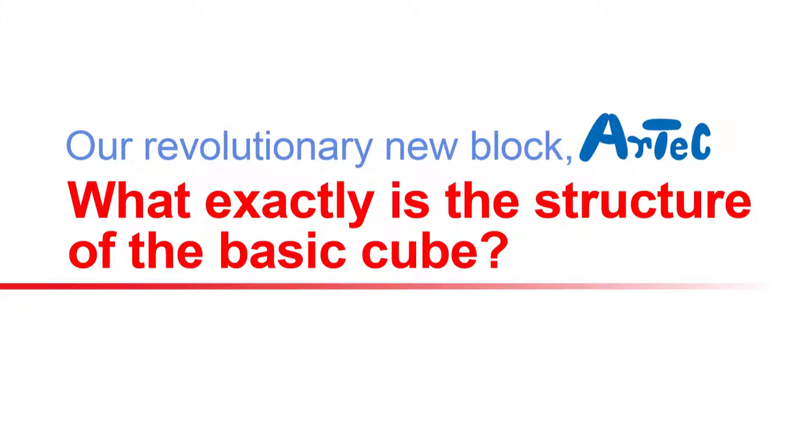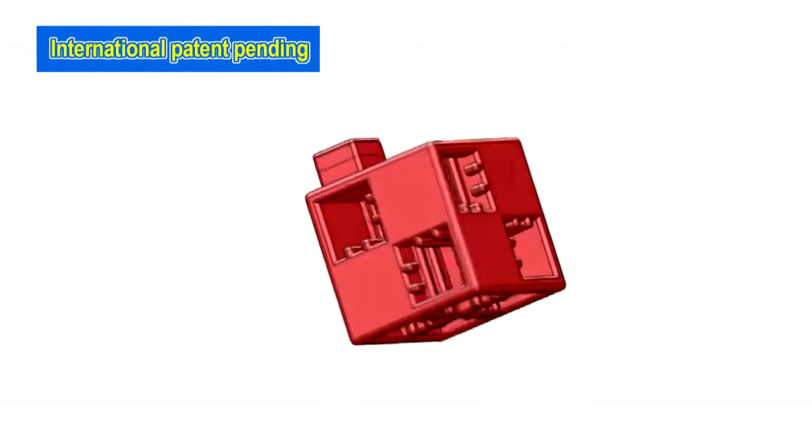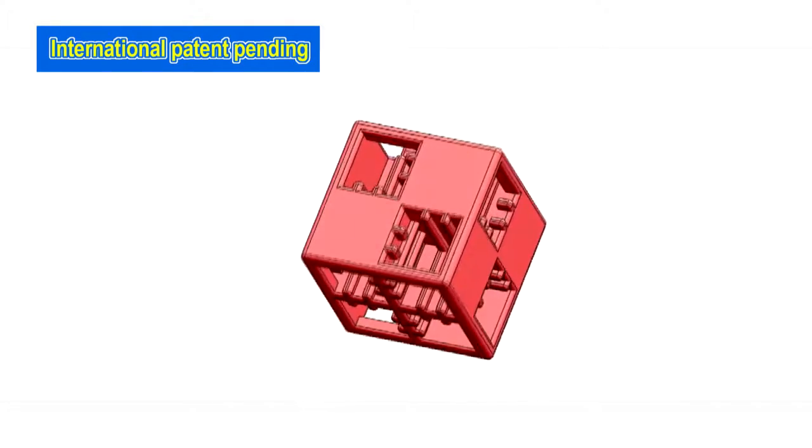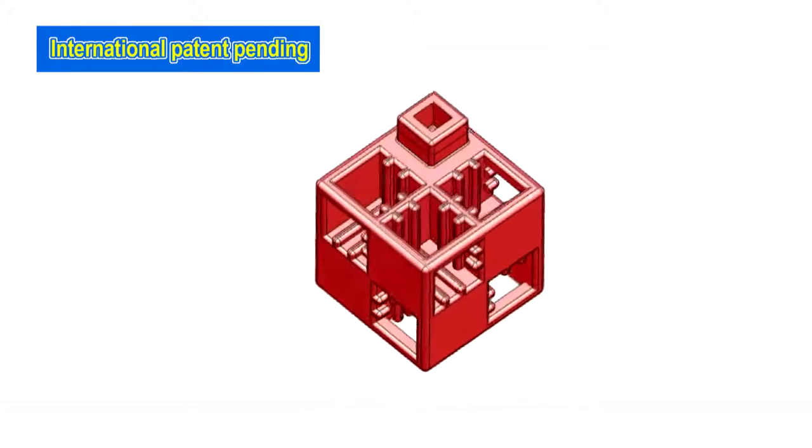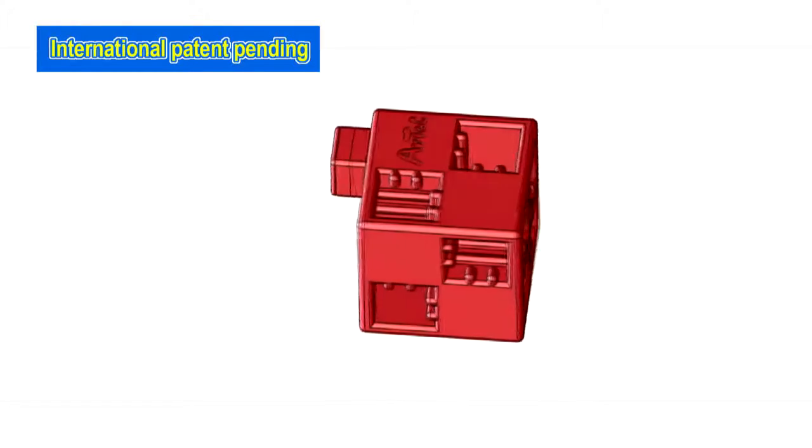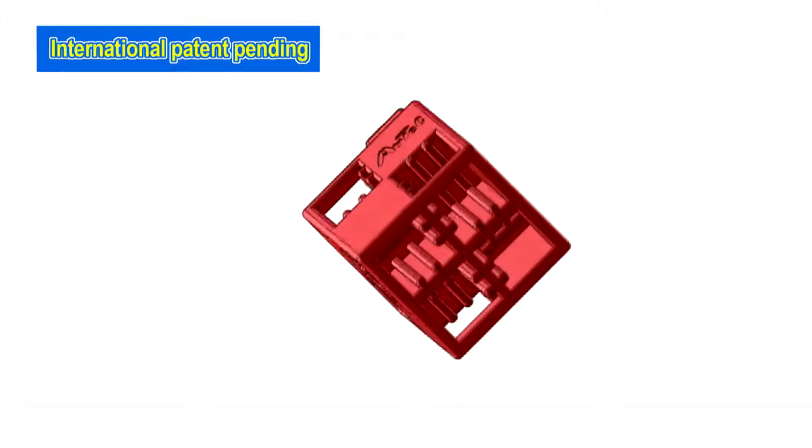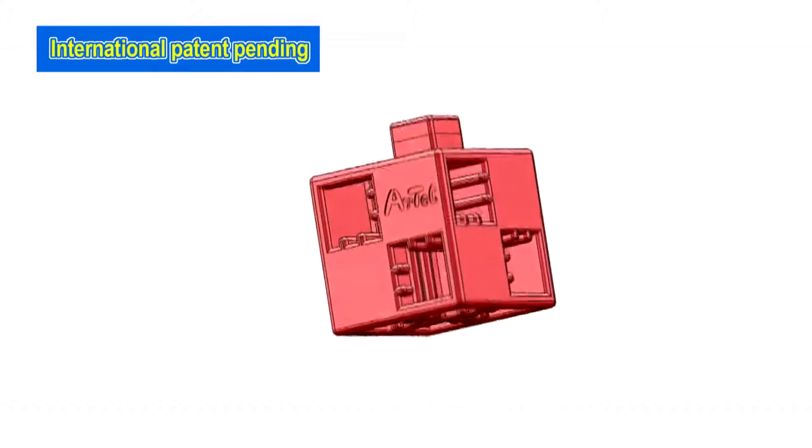What exactly is the structure of the basic cube? Each face of every cubic block features several square holes and a single square stud located off-center. We have developed a block structure that has never been seen before.